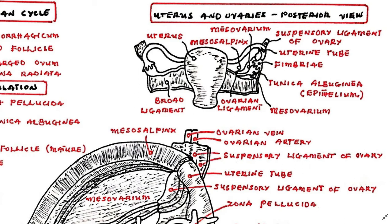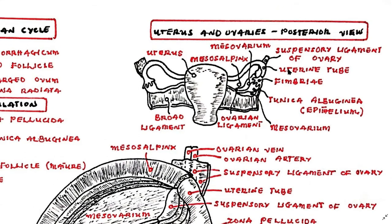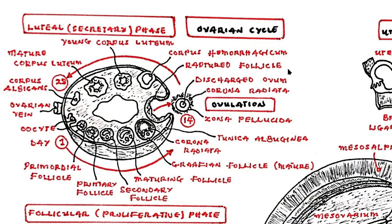Upon expulsion from the ovary, the ovum must avoid this space; otherwise it will miss being picked up by the fimbria into the uterine tube, which is an opportunity of a lifetime. The tunica albuginea is a layer of condensed tissue on the surface of the ovary, composed of short connective tissue fibers with fusiform cells between them. Primordial ova migrate from the embryonic yolk sac into the ovarian stroma and proliferate; hundreds of thousands develop, but only a few hundred ever reach maturity.